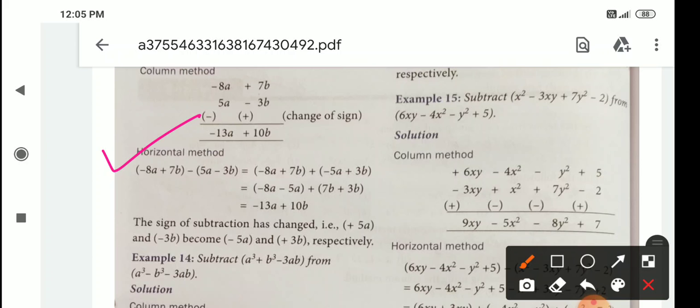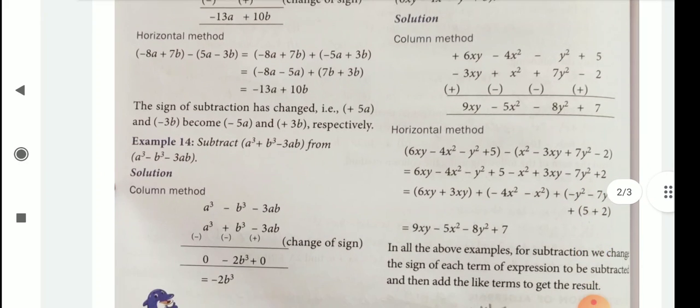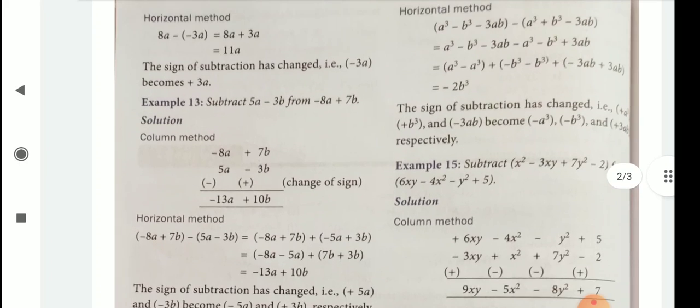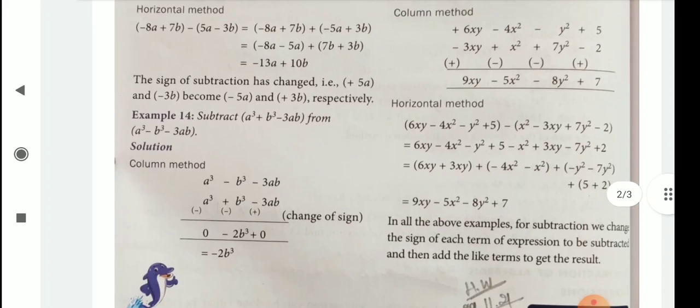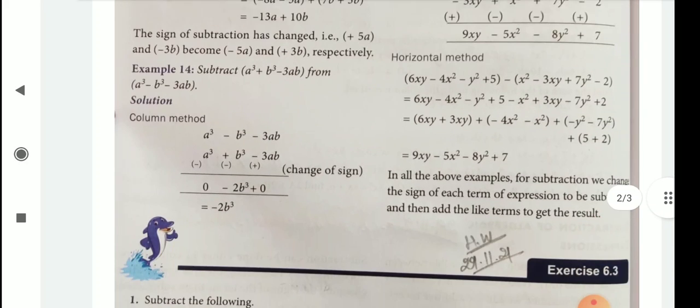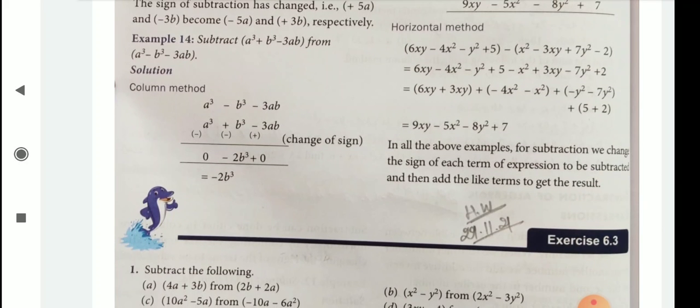Minus 8a plus 7b minus 5a minus 3b. So first of all, we change the numbers in additive inverse. Plus 5a means children minus 5a, and minus 3b means children plus 3b. Then easily, you arrange the like terms. Then you do subtraction. Like this children, you see example 14, example 15. Up to example 15, you see all the examples, both column method and horizontal method.